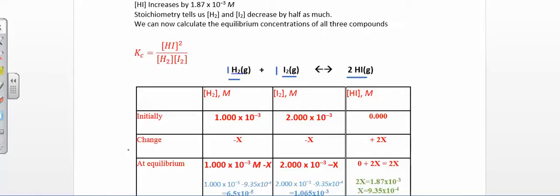On the change line, I'm reacting reactants so I put a negative — some number of moles will be used up. Both reactants are decreasing, which means the product is increasing. So I subtract from reactants and add to products. The change entries are −x, −x, and +2x, coming directly from the stoichiometric coefficients 1, 1, and 2. Reactants you're subtracting and products you're gaining.